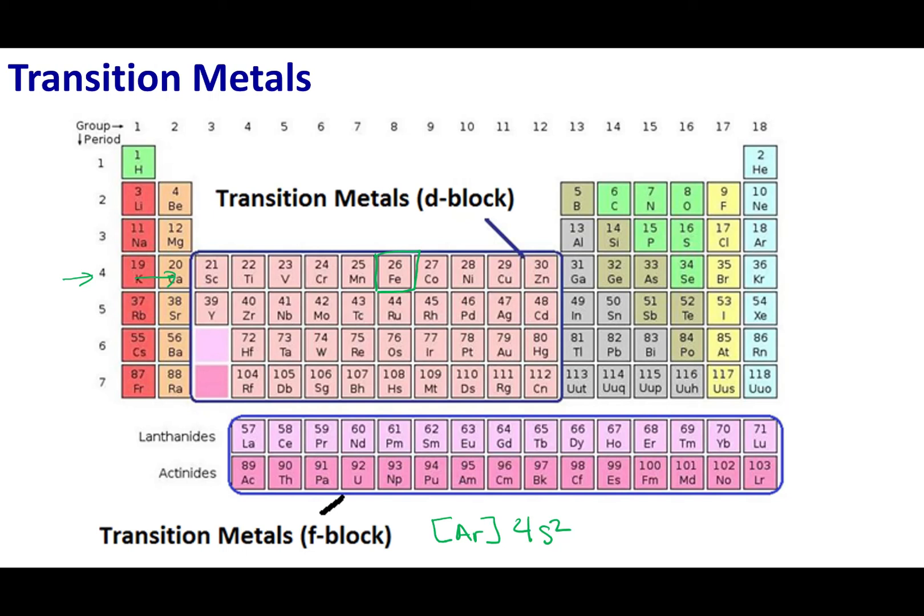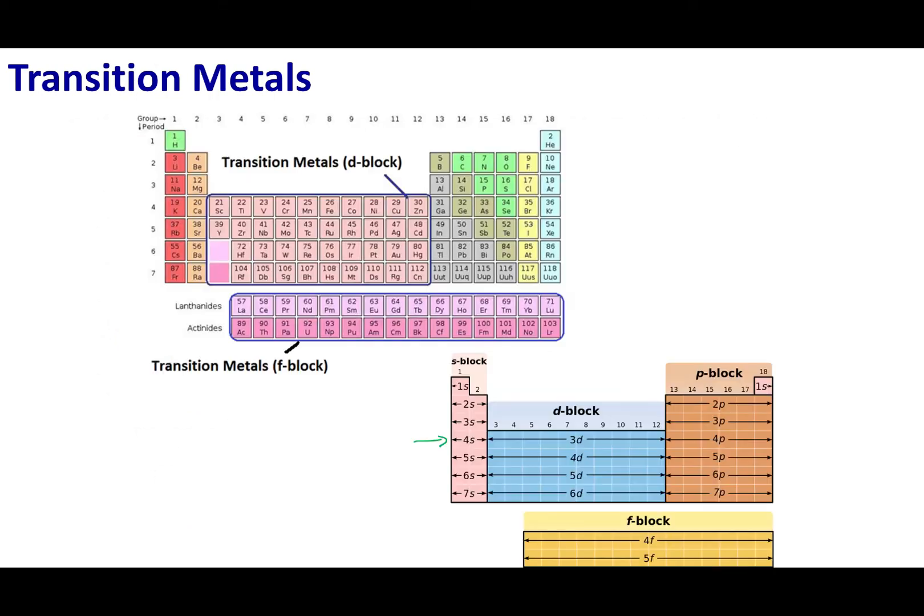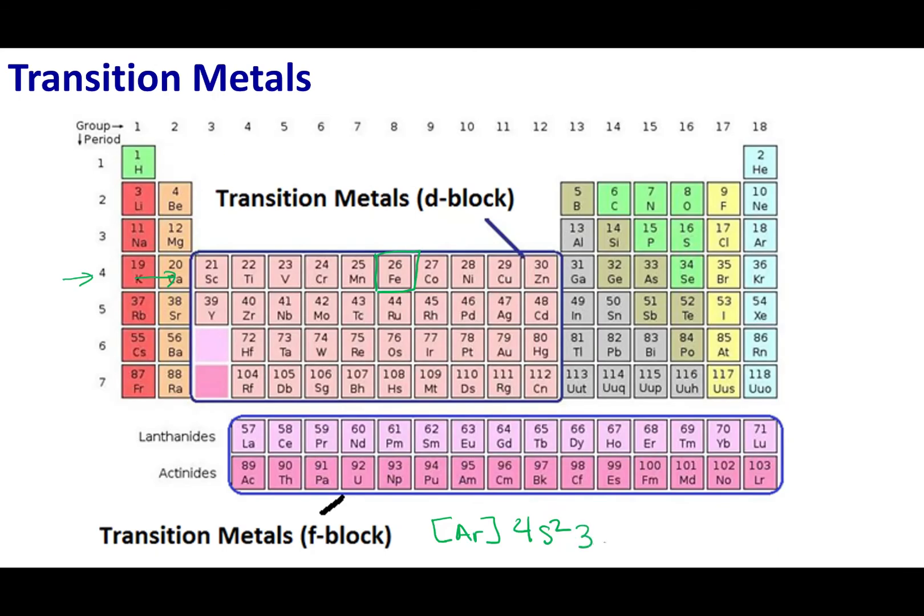That gets me two elements across completing my s-block. Now I can start going into my d-block. When you look at the d-block, the d-block is offset by one. If we look at row number four, even though it starts off with the 4s, we move into the 3d. If we started with the 5s, we would go to the 4d. You'll also know that the f-block is two offset.